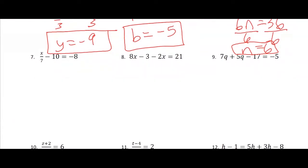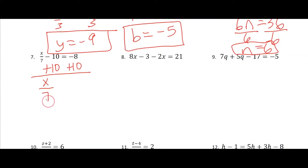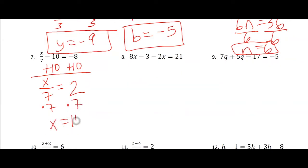Number 7, I'm going to add 10 to both sides, so we get x over 7 equals 2, and then multiply by 7 on both sides. I should get x equals 14.